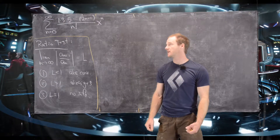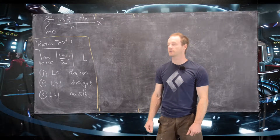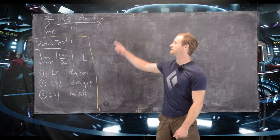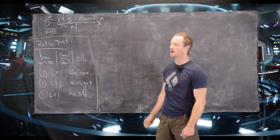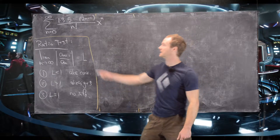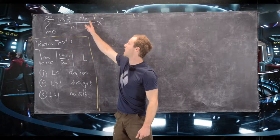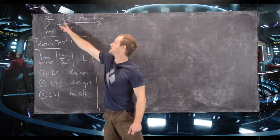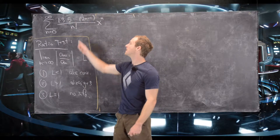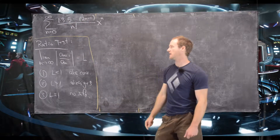In this video we're going to look at an example of finding the radius and interval of convergence for a power series. Our power series in this case is the sum from n equals zero to infinity of the rising product of odd numbers — 1 times 3 times 5 up to 2n minus 1 — over n factorial, times x to the n.